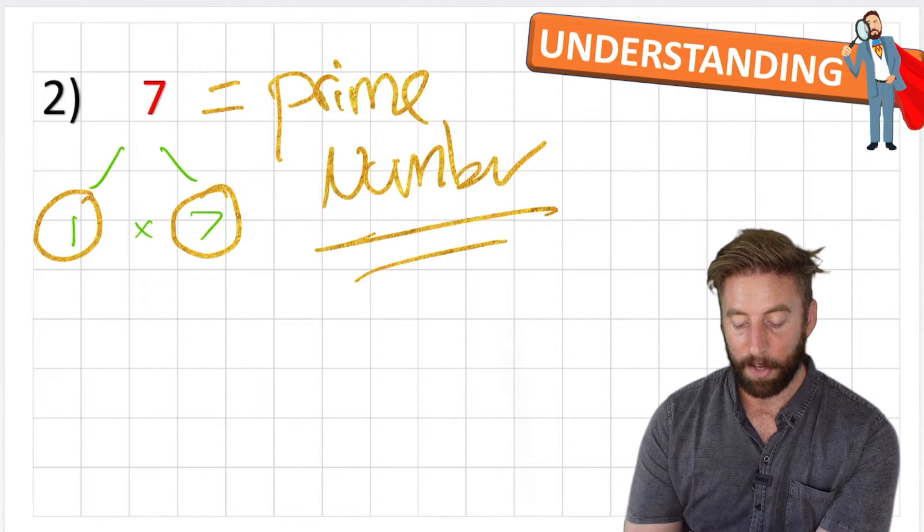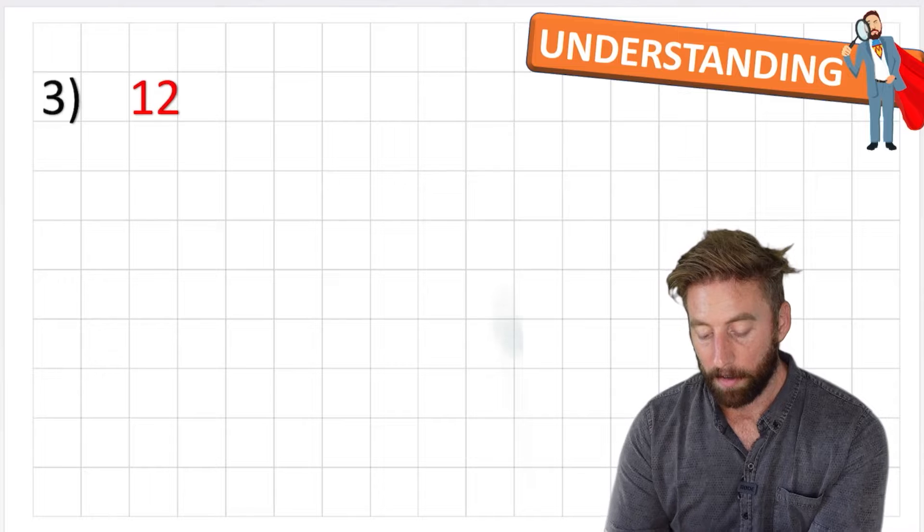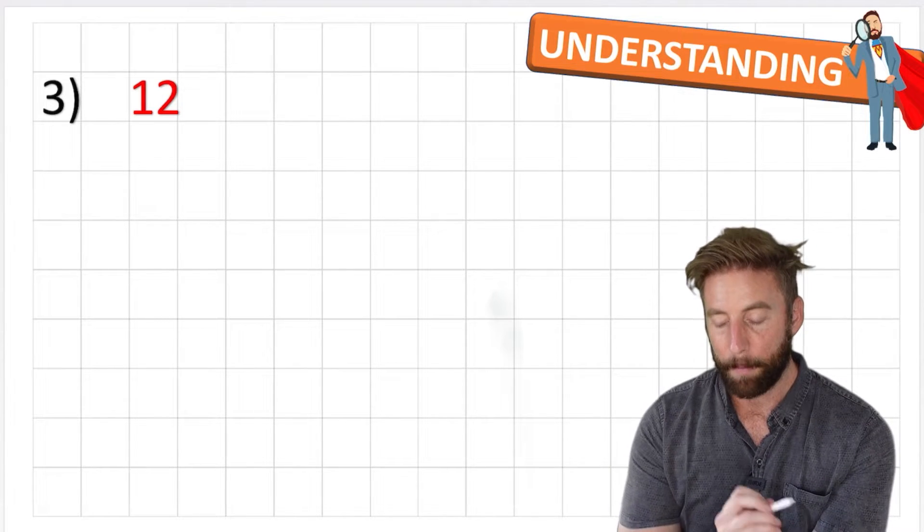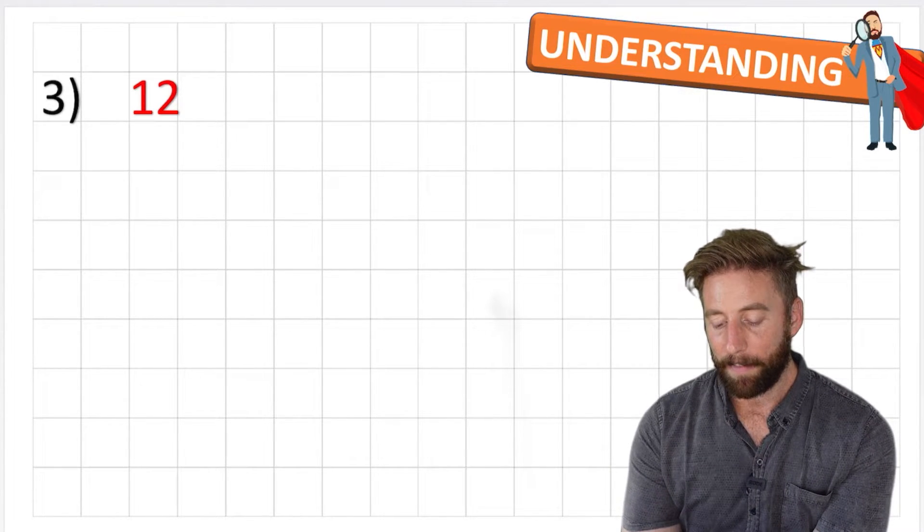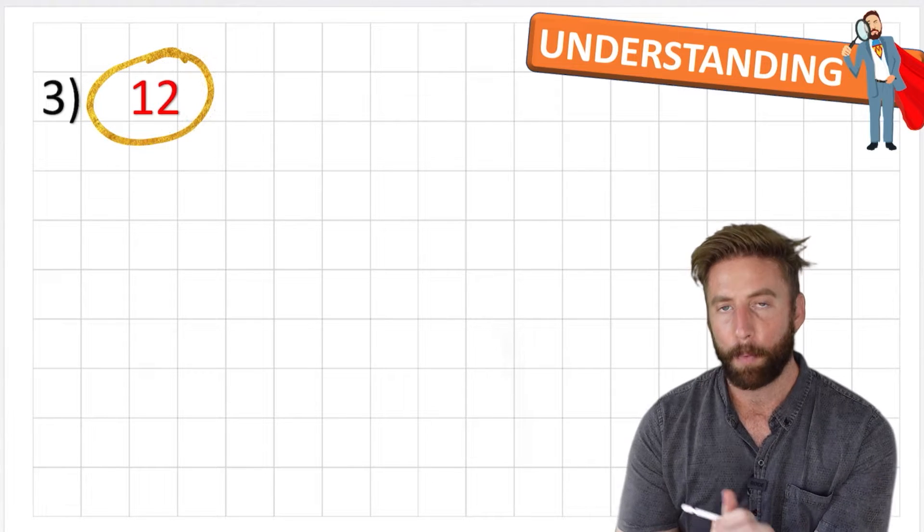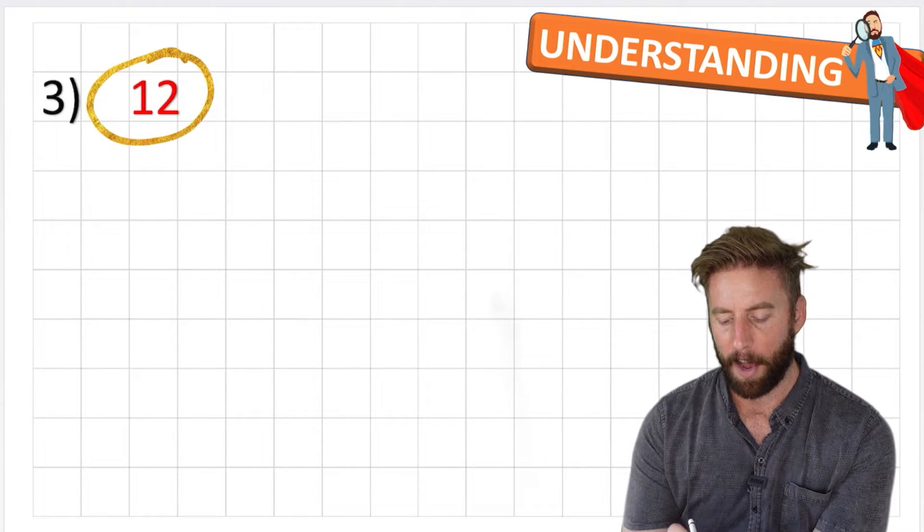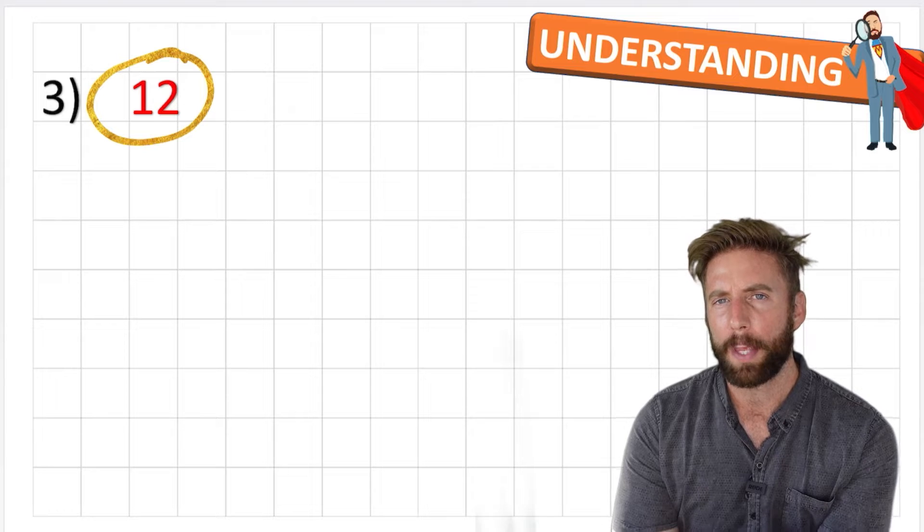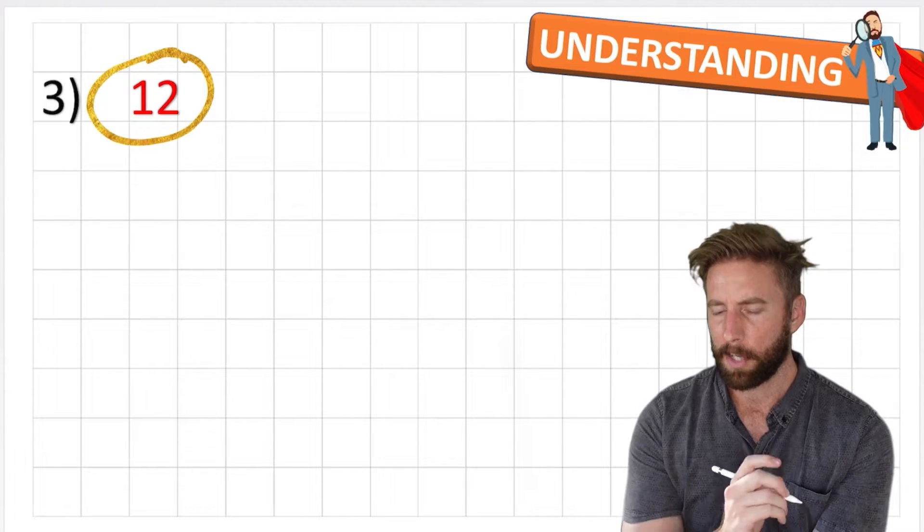Okay, let's have a look at our next example, number twelve. Now I'm going to let you in on a bit of a secret here, a bit of a top tip. We have an even number here. So by definition, we can always divide an even number by two. So does it mean that no even numbers can be prime numbers? Let's check.